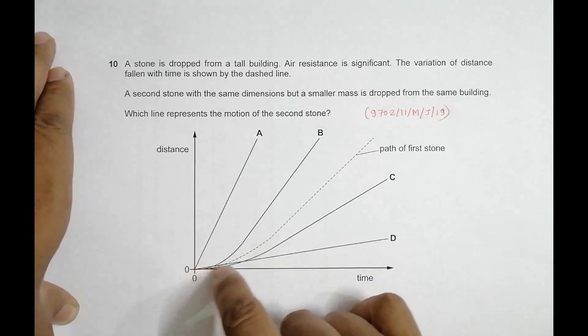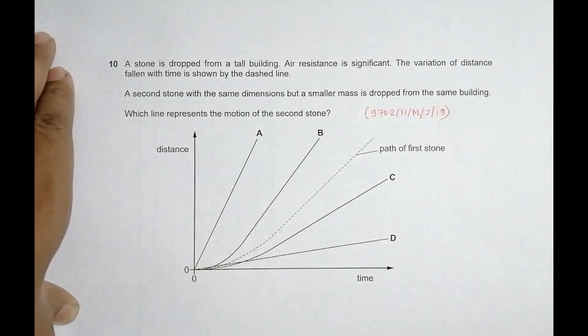A second stone with same dimensions but a smaller mass is dropped from the same building. Which line represents the motion of the second stone?